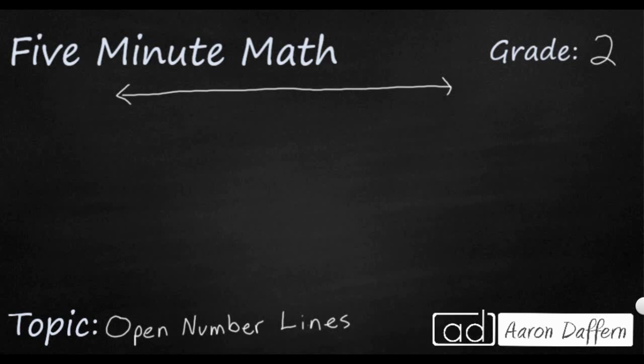So first let's see how we can use an open number line to order some numbers. Let's say we have 23, we have 47, we have 19, and then we've got 52. So how can we put those numbers in order? In this case we're going to go from least to greatest.